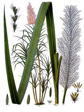Sugarcane, or sugarcane, are several species of tall perennial true grasses of the genus Saccharum, tribe Andropogonaeae, native to the warm temperate to tropical regions of South and Southeast Asia, Polynesia and Melanesia, and used for sugar production.